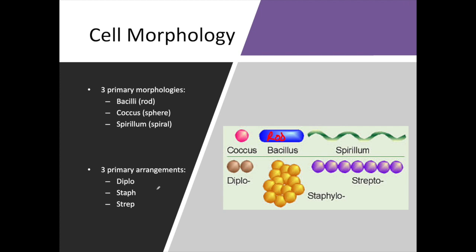There are also three primary arrangements. Arrangements are how individual, or planktonic, bacterial cells interact with each other. Sometimes they like to pair off and form two pairs — this is referred to as diplo. Then we have the staph arrangement, where they cluster together — think like a group of grapes. And then the last is the strep arrangement, which causes strep throat and is caused by Streptococcus pyogenes. The strep arrangement is usually cocci, although we also see this in rods and bacilli as well, and they line up end to end creating long chains of bacterial cells.